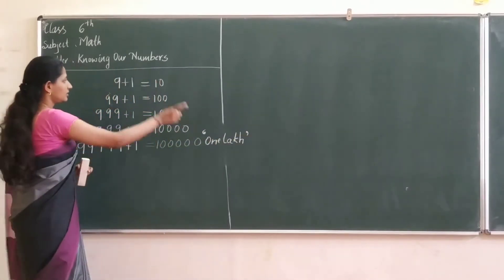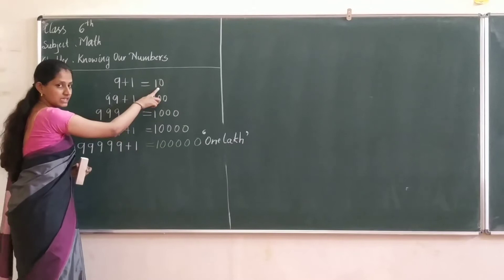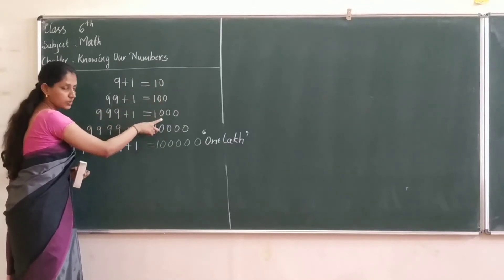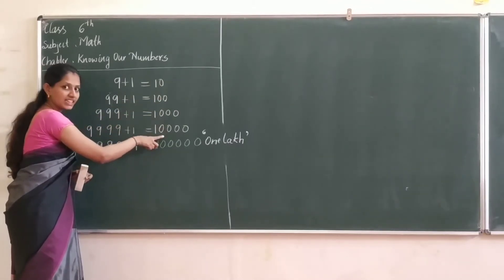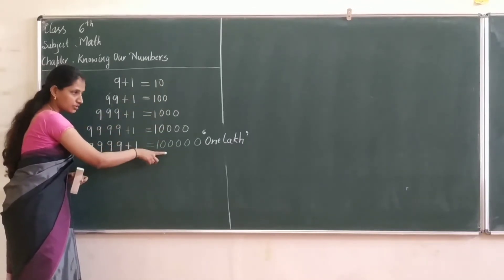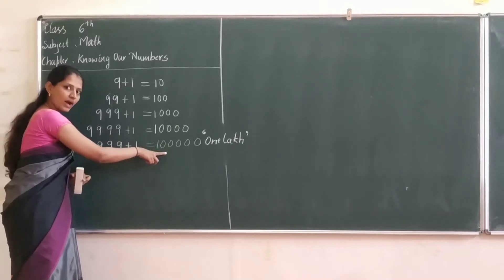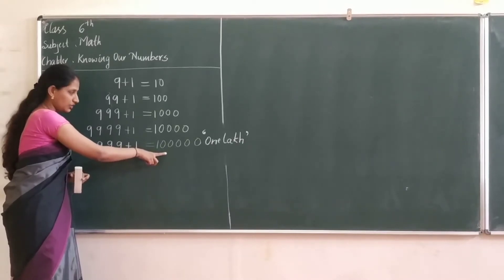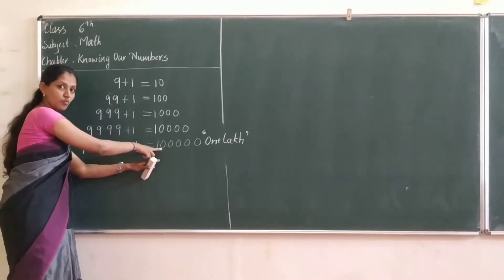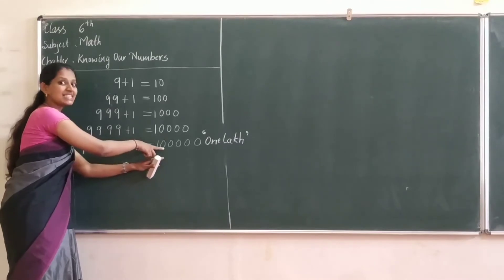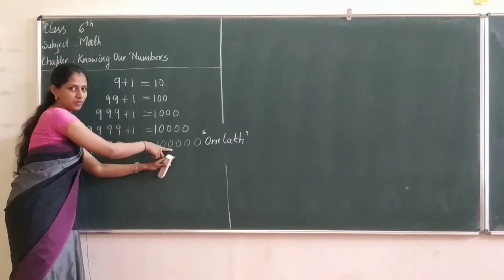That is: 10, 100, 1000, 10,000, then comes 1 lakh. Now, understood — that is the smallest 6-digit number.